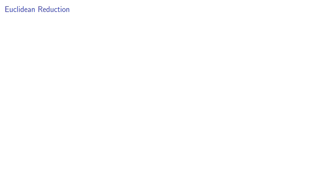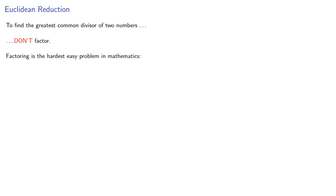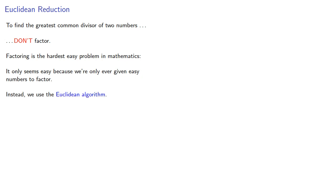To find the greatest common divisor of two numbers, don't factor. Factoring is the hardest easy problem in mathematics — it only seems easy because we're only ever given easy numbers to factor. Instead, we use the Euclidean algorithm.